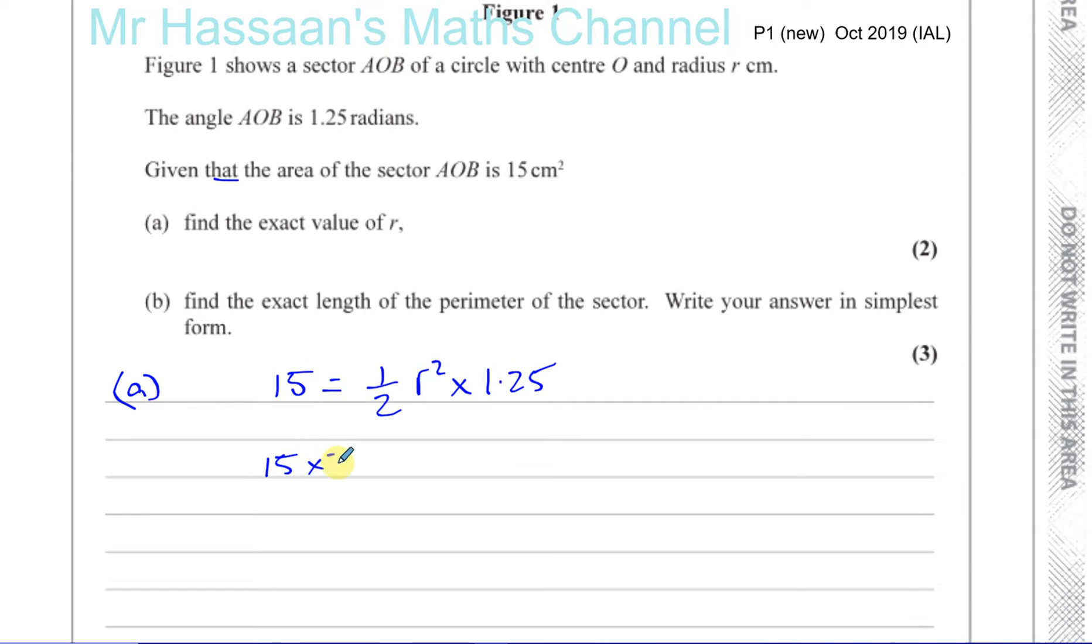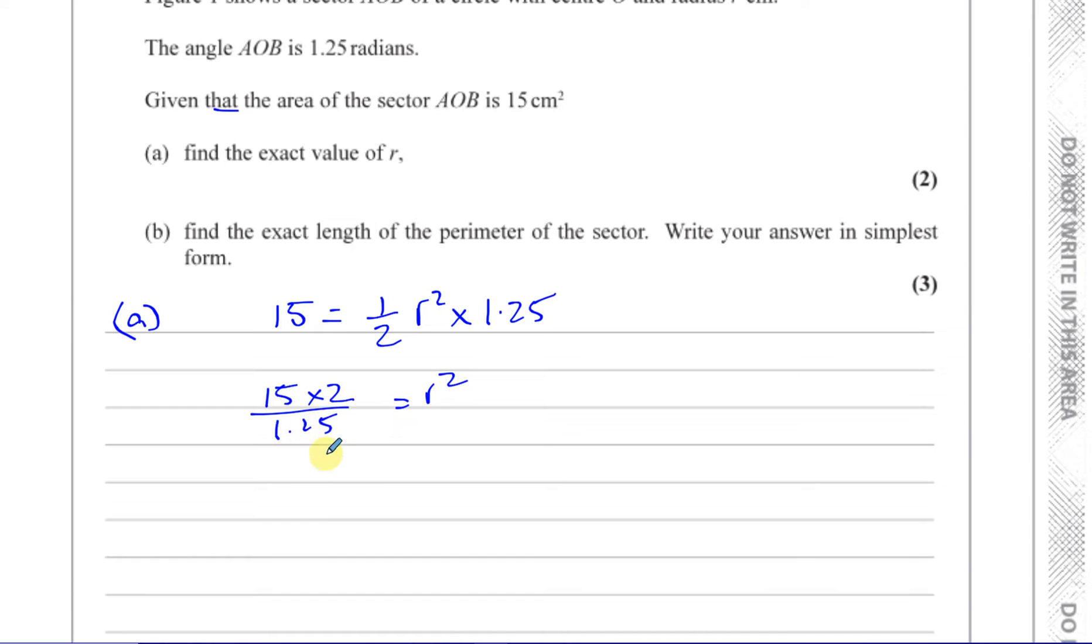So when you calculate R, you can just rearrange this formula. You have 15 times 2 divided by 1.25 is equal to R squared. And then simplifying that, this is like 5 over 4. So you're going to have 30 times 4 over 5 equals R squared. So you end up with 6 times 4 is 24. So R squared is equal to 24. So R is equal to the square root of 24.